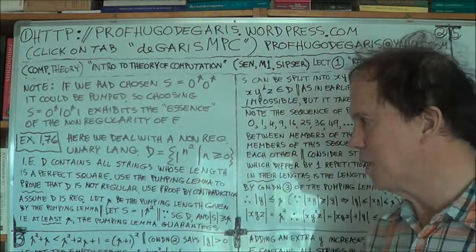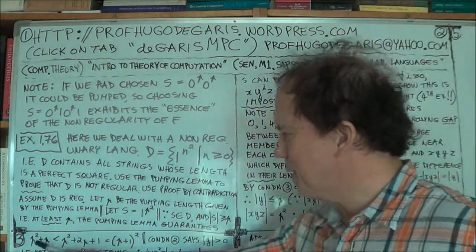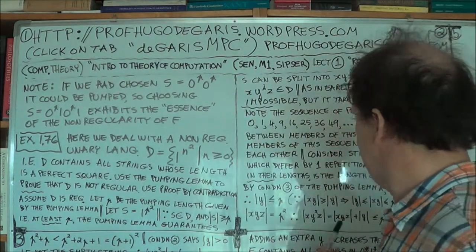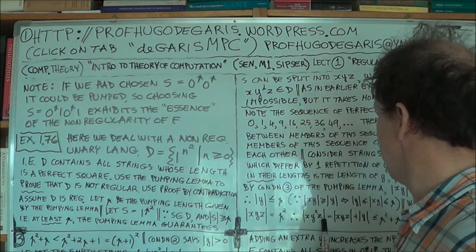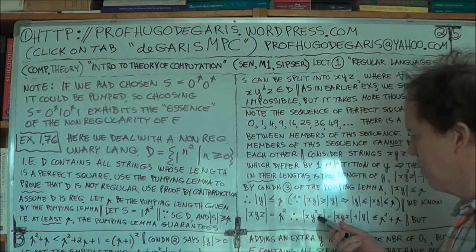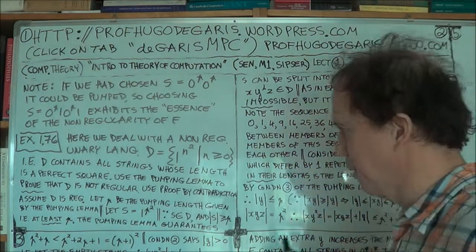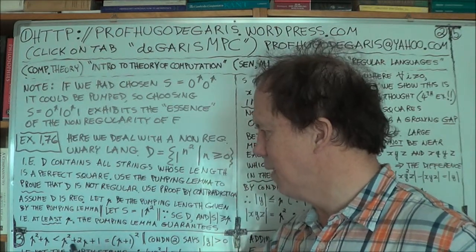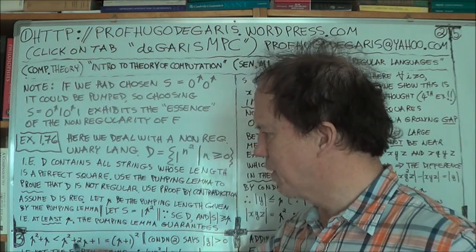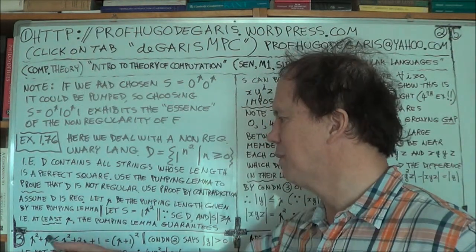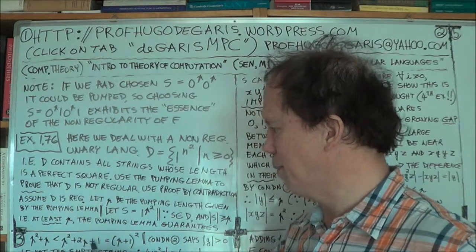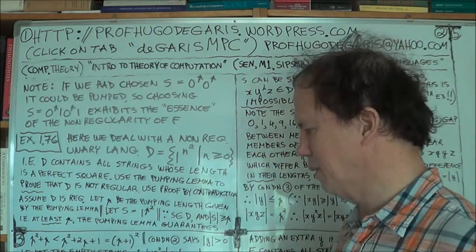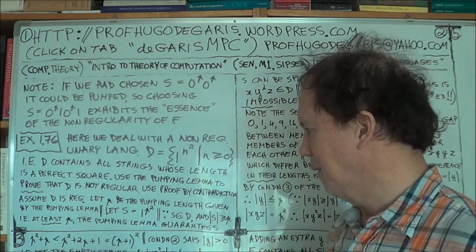I think you probably see the first line of the next session. So we've got the size of XY squared Z is less or equal to P squared plus P. Now, P squared plus P is less than P squared plus 2P plus 1. That's pretty obvious. But P squared plus 2P plus 1 is just the square of P plus 1. Now we'll use that, but I'll just go straight on to the next session.